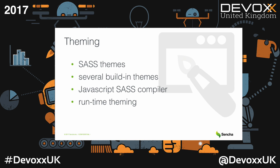Theming of an Ext.js application is based on SASS - Syntactically Awesome CSS - which is CSS with variables and mixins. We have several predefined themes like a Material Design theme and an iOS theme, but you can extend and configure them in a graphical interface. You can change the theme or just change variables - colors for buttons, grid headers, background colors, etc. We also provide a JavaScript-based SASS compiler called Fashion that can compile SASS into CSS directly in the browser, allowing you to theme your application without page reload - just runtime theming.